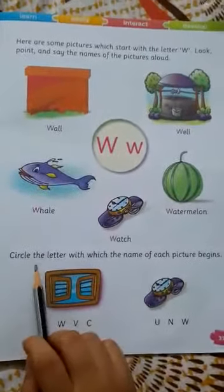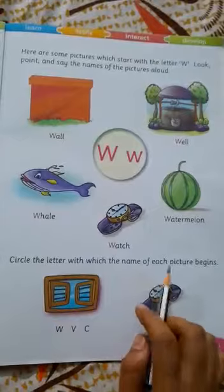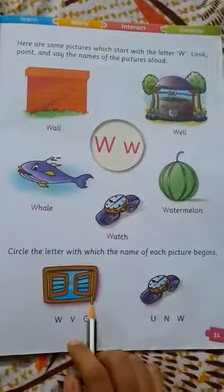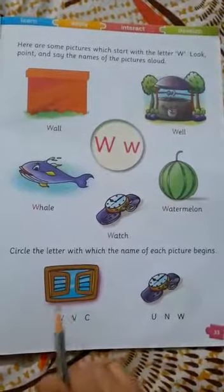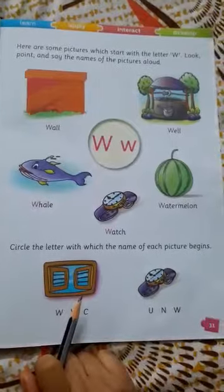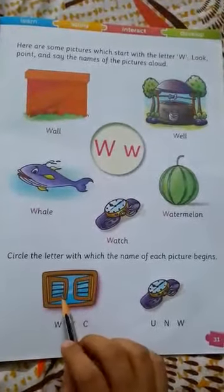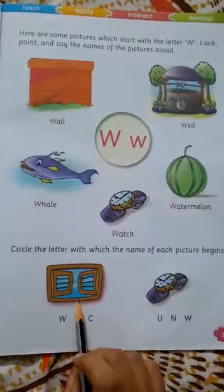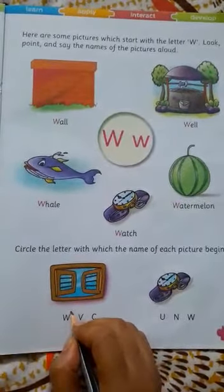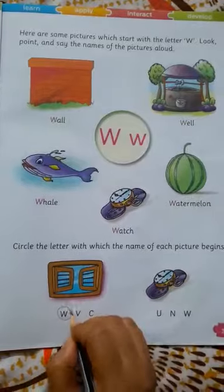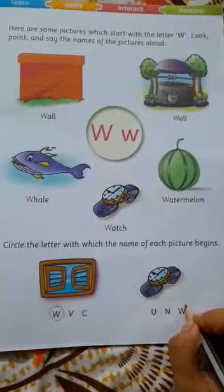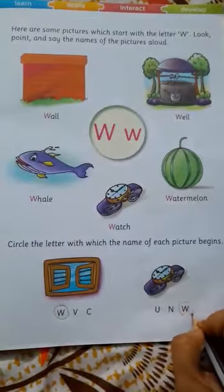Then circle the letter with which the name of each picture begins. See there are two pictures. You have to circle the letter with which their name begins. See the picture. It is a picture of window. Which picture is this? It is a picture of window. So W for window, circle the letter W. Then it is a picture of watch, circle the letter W. Because W for watch.